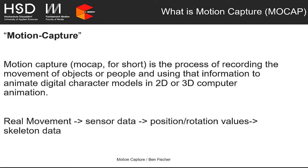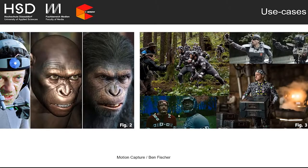Motion capture, or mocap for short, is the process of recording the movement of objects or people and using that information to animate digital character models in 2D or 3D computer animations. You take real movement, use some kind of sensor to transform it into data a computer can understand, and the computer calculates position and rotation values, producing a skeleton you can use to animate basically whatever you want.